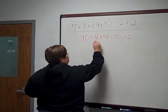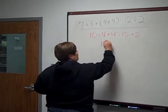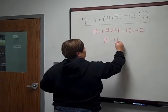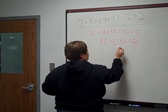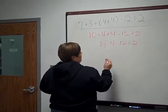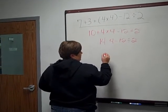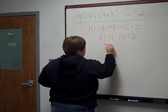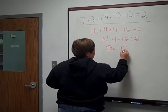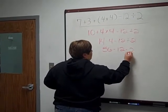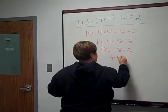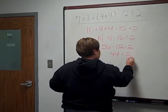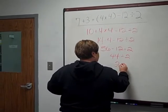You add 10 and 4 together and you have 14 times 4 minus 12 divided by 2. 14 times 4 is 56 minus 12 divided by 2. You have 44 divided by 2 and your answer is 22.